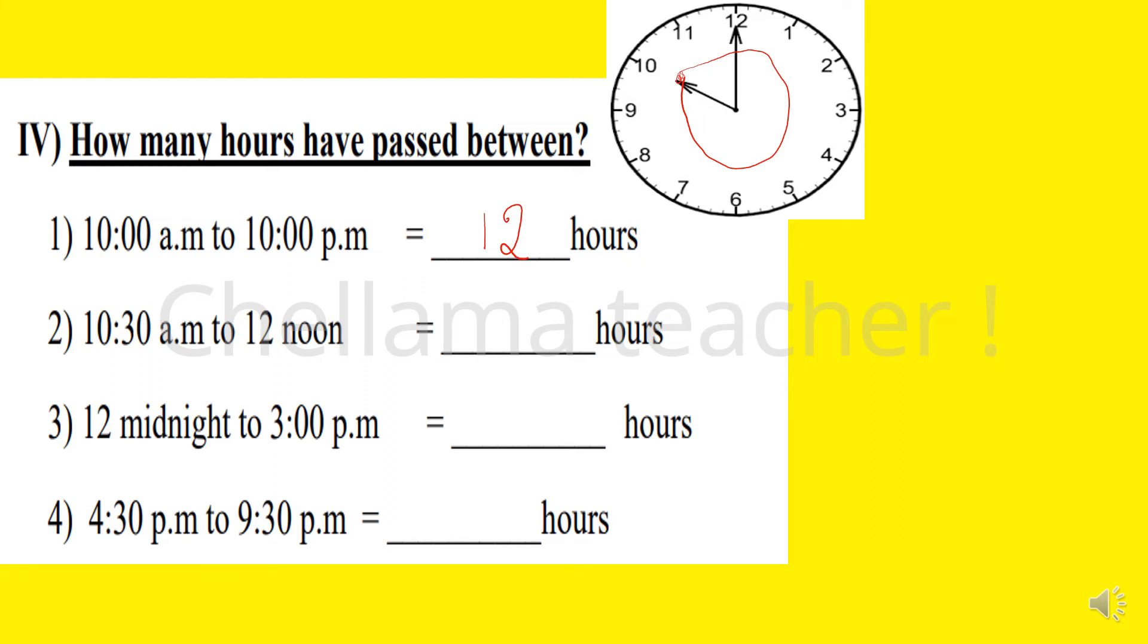Next is question number 2: 10:30 AM to 12 noon. Let's see the clock. The time is now 10:30 AM, and the small hand has to move to 12 noon here. From here to here it should move. So how many hours in between? One and a half hours. One hour and half an hour, so one and a half hours.